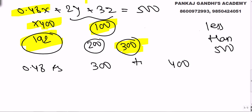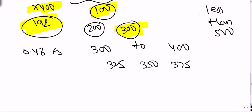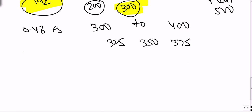Between 300 and 400, the multiples of 25 are 325, 350, and 375 — three possibilities. Let's try x = 350 stamps of 0.48.